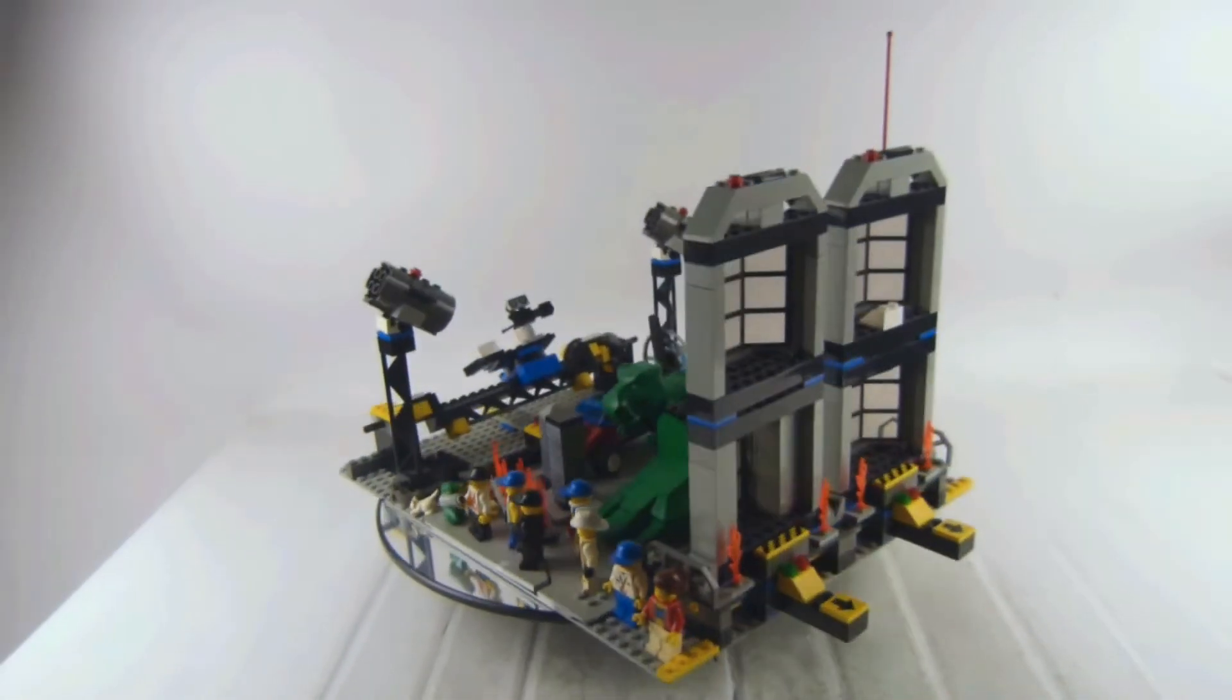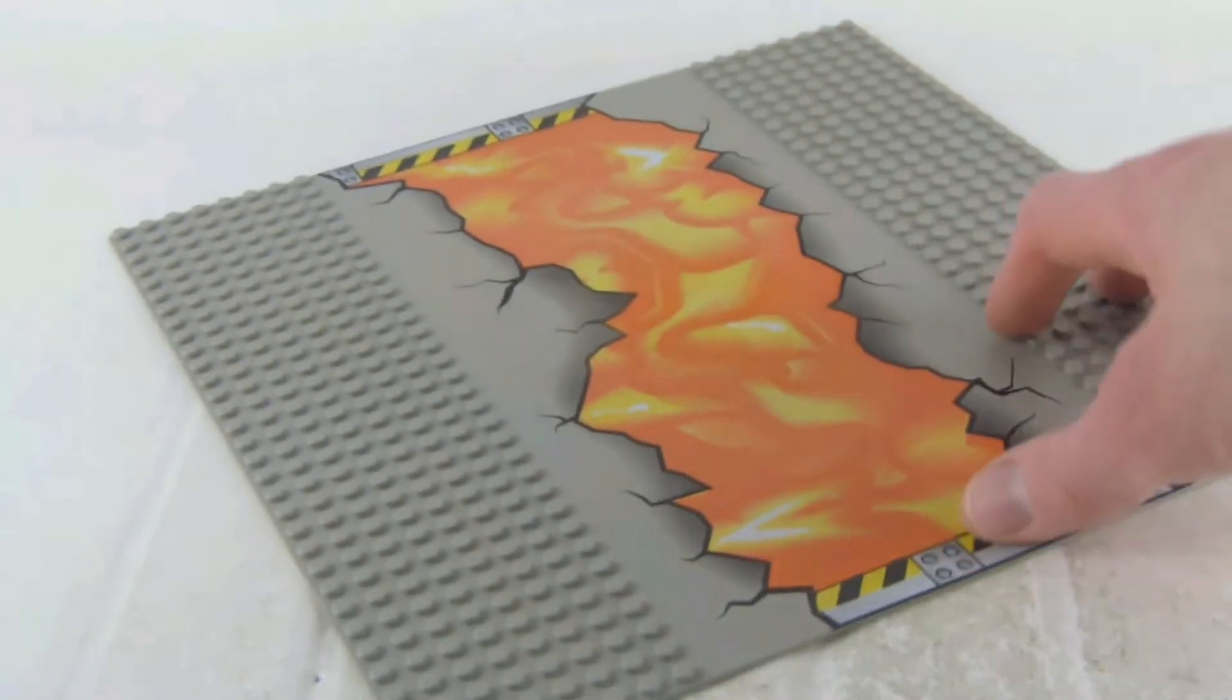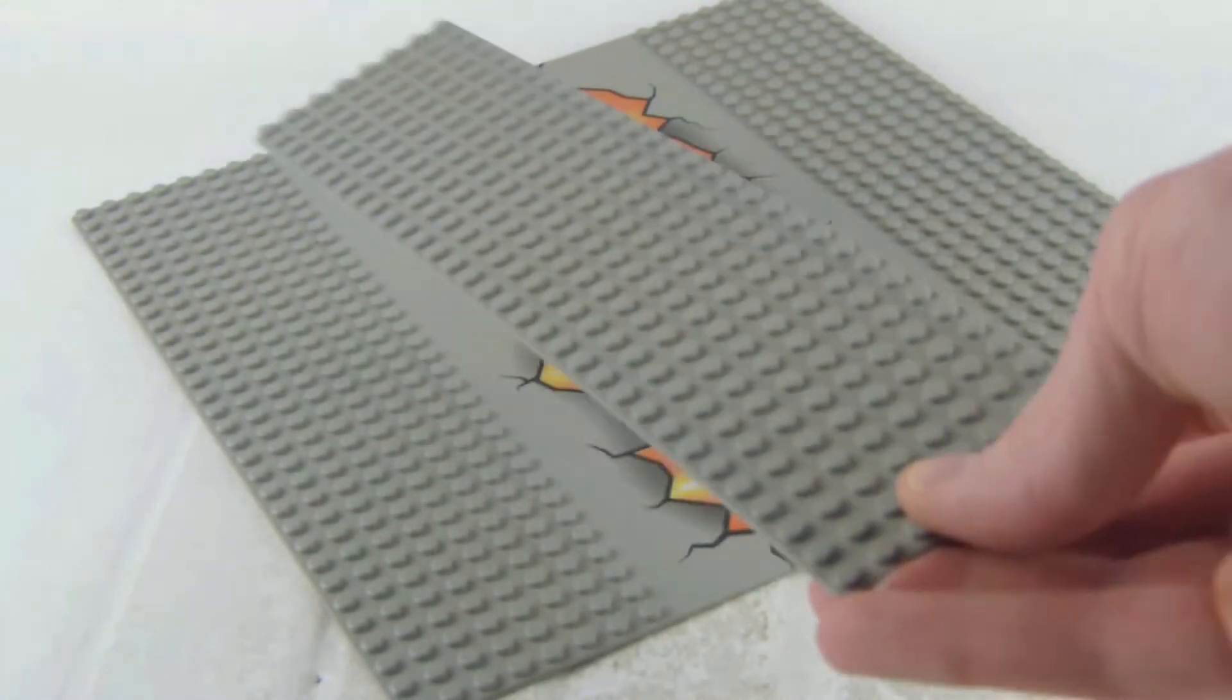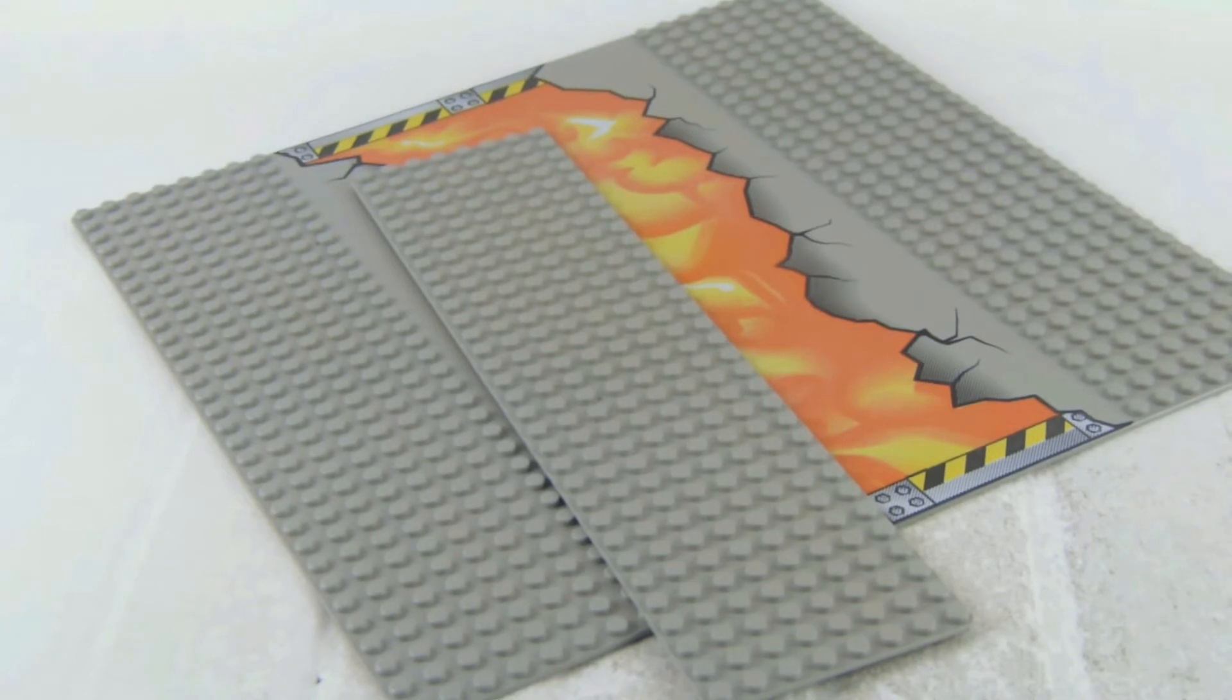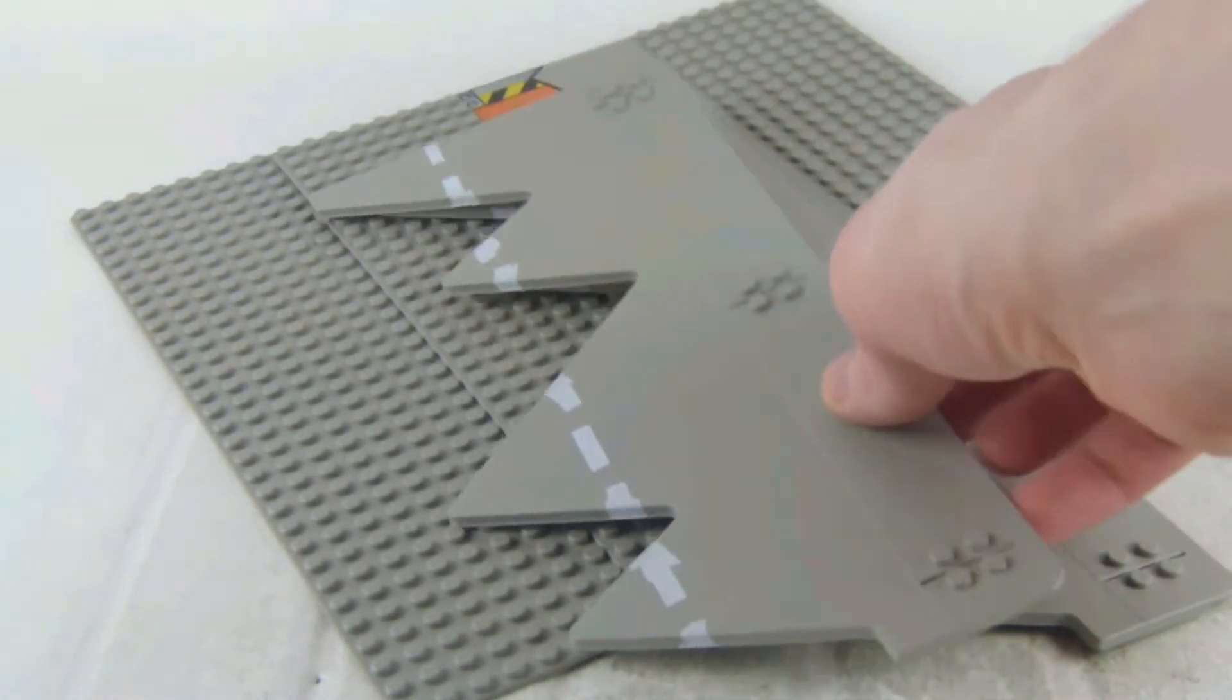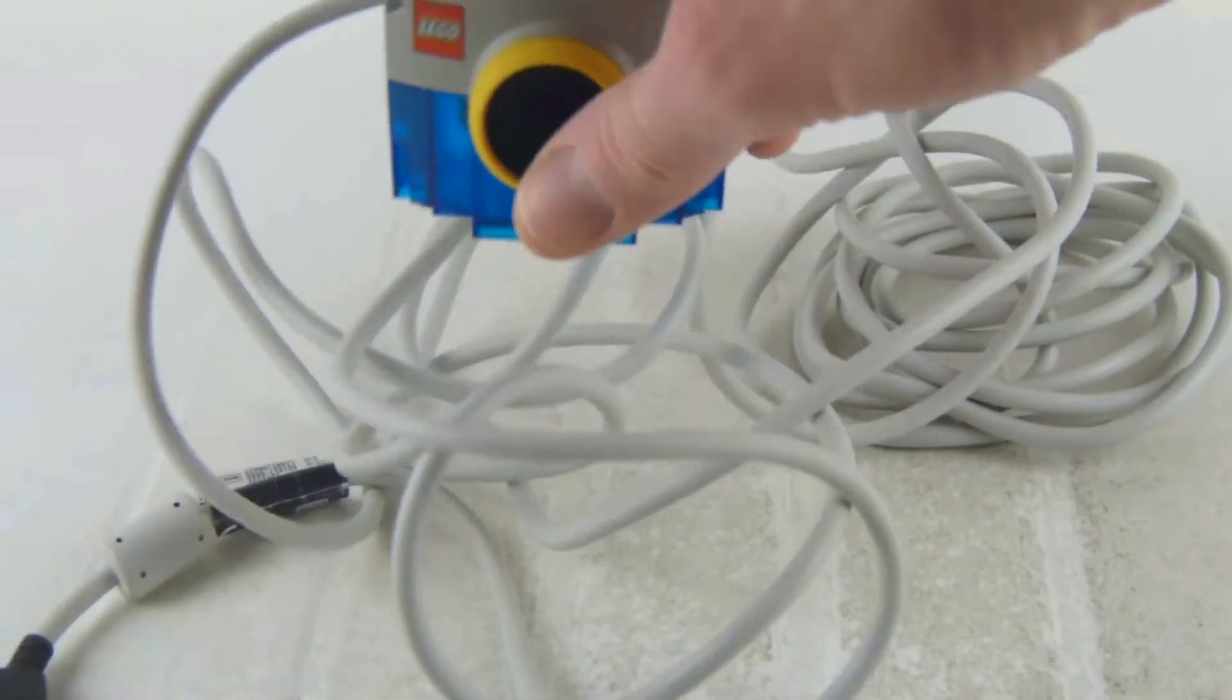This set came out in 2000 and has 442 pieces and 7 minifigures. Look at these base plates there - I think these are phenomenal. We get that lava there, then we get this base plate and two specialized cracked plates for the earthquake scene. I think that's very nostalgic, and I also want to show you that camera there.